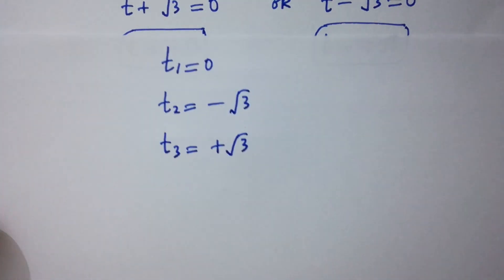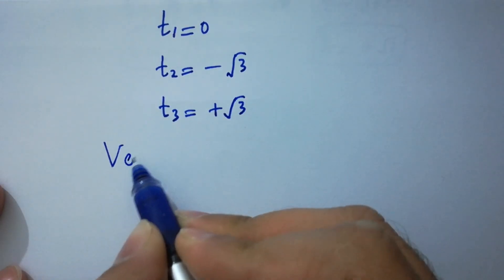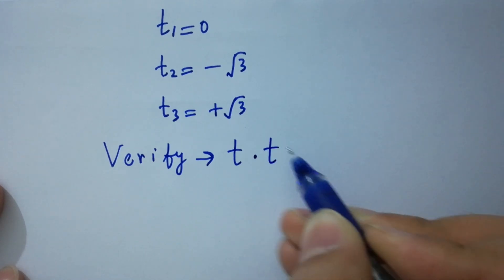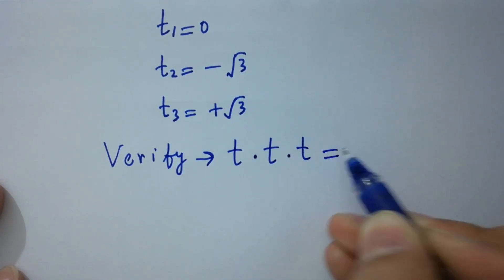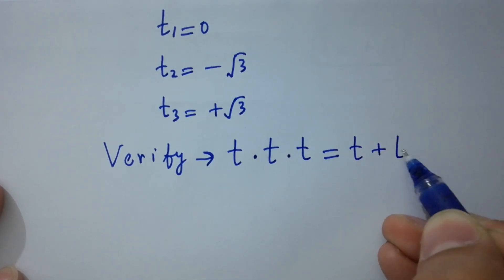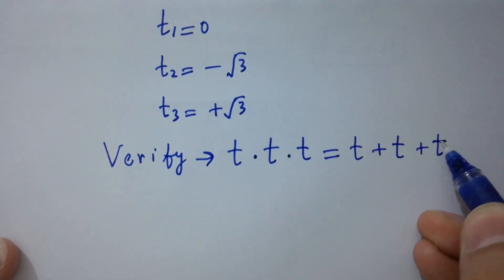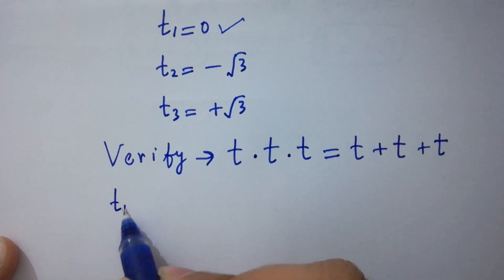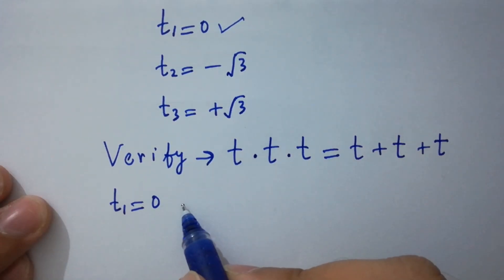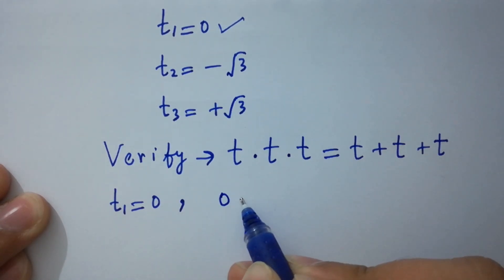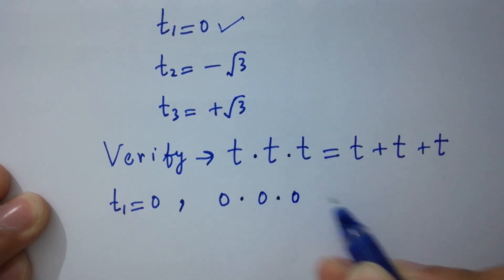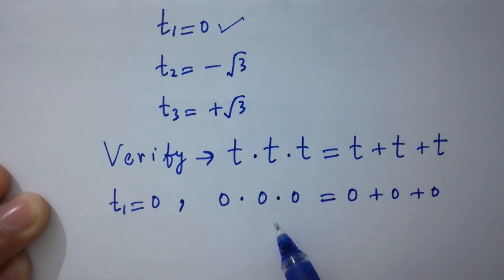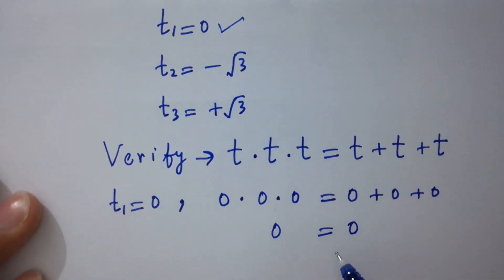In the next step I am going to verify. For t times t times t equal to t plus t plus t, first take t1 equal to 0: 0 times 0 times 0 equal to 0 plus 0 plus 0, giving 0 equal to 0. Left-hand side equals right-hand side.